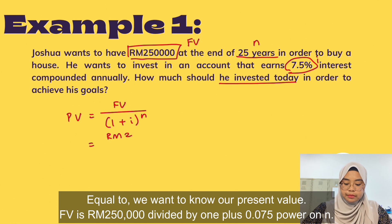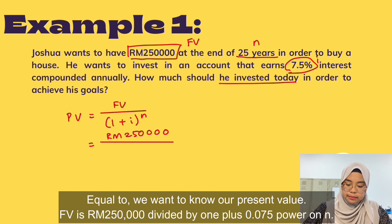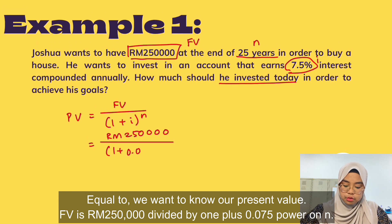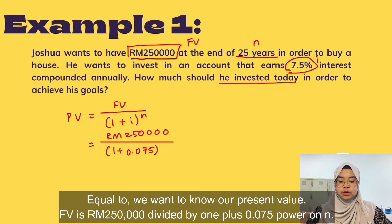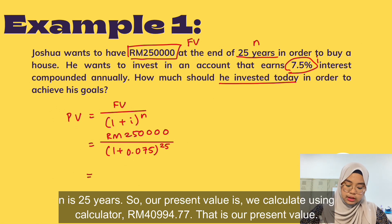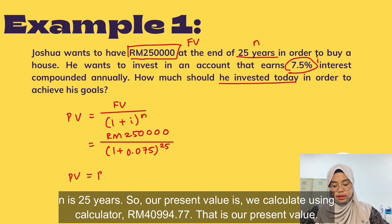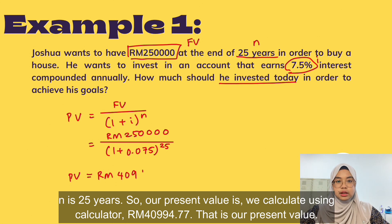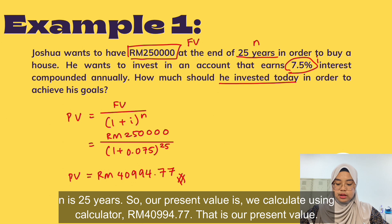Substituting the values: PV equals RM250,000 divided by (1 plus 0.075) to the power of 25. Calculating using a calculator gives us a present value of RM40,994.74. That is the amount Joshua should invest today.